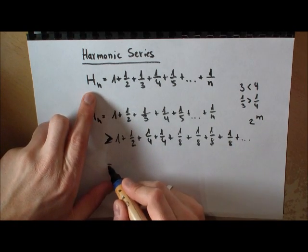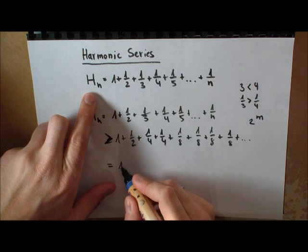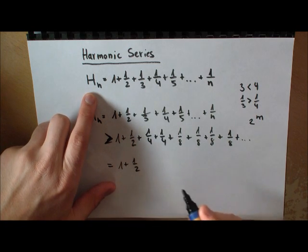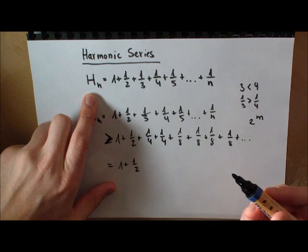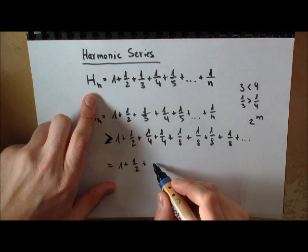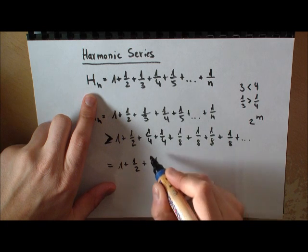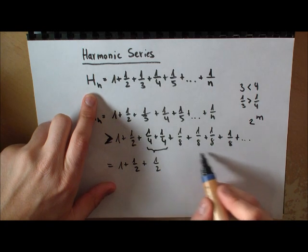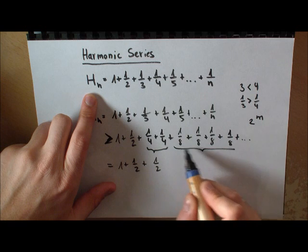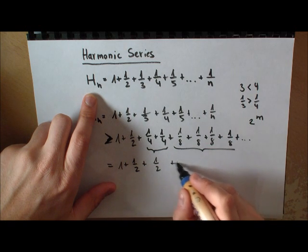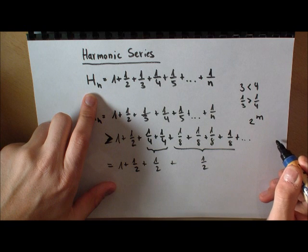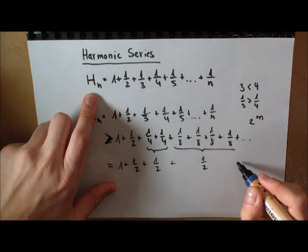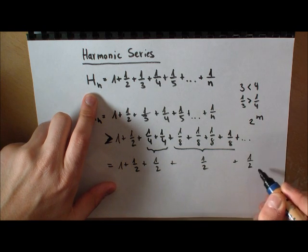Now why did I do this? Now let's just come here and look what will happen. Actually what you see here is I get 1 over 4 plus 1 over 4, which is 1 half. What does happen here? I have 1 over 8 four times. So this gives me again a 1 half. And here I had 8 times 1 over 16 giving me again 1 over 2.